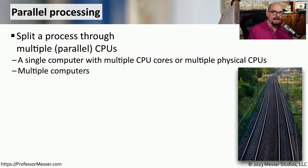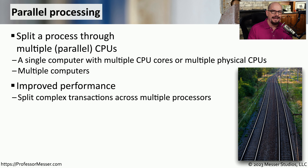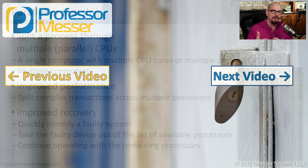Another way to provide additional recovery options is by using parallel processing. This allows multiple CPUs or processes to be used simultaneously to process transactions — either a single device with multiple cores, or an infrastructure with multiple computers. Instead of a single CPU handling a large number of complex transactions, we can spread those transactions across multiple CPUs and complete them much more efficiently. This also provides a level of resiliency: if one processor becomes unavailable, we can still spread the load across the remaining processors in our parallel processing infrastructure.